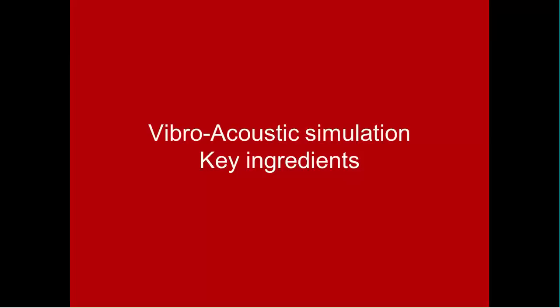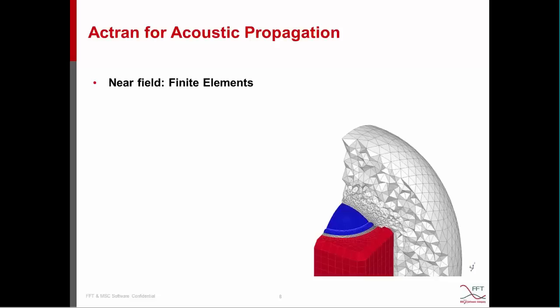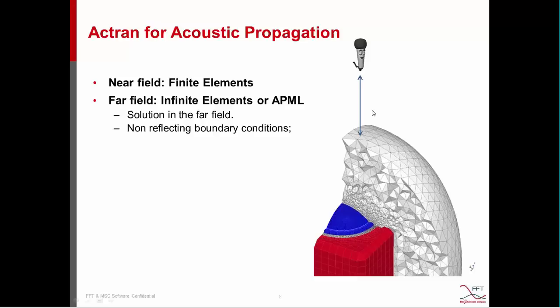Now we can see what are the key ingredients for vibroacoustic simulation. Basically, to design audio appliances, we will need Actran Vibroacoustics. First of all, we need to simulate the acoustic field radiating from a certain object. We need to compute both the near field — done by means of a finite elements domain — and the sound pressure level outside the finite element domain, for example at one or more meters of distance. To this aim, we can use infinite elements or the APML. We need these components to get the far-field solution and also to have a non-reflecting boundary condition.